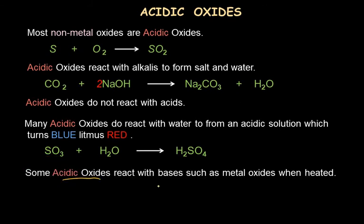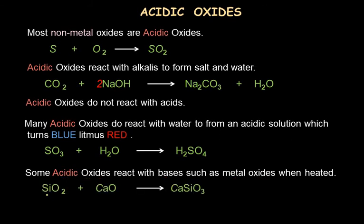Some acidic oxides may react with bases like metal oxides. Acidic oxides can react with metal oxides when heated. For example, silicon dioxide, which is an acidic oxide, will react with a basic oxide — calcium oxide — when heated to form the salt calcium silicate. This reaction can only occur when they are heated together.